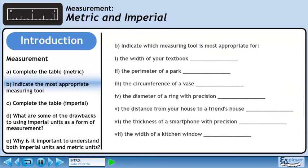Now we'll move on to a list of scenarios. Pick the measuring tool that is most appropriate in each case. The width of your textbook can be measured with a 30 centimeter ruler. The perimeter of a park can be measured with a trundle wheel. The circumference of a vase can be measured with a tape measure. The diameter of a ring can be measured with precision using calipers. The distance from your house to a friend's house can be measured with a trundle wheel. The thickness of a smartphone can be measured with precision using calipers. The width of a kitchen window can be measured with a tape measure.